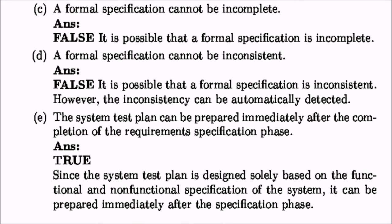(c) A formal specification cannot be incomplete — FALSE, because it is possible for a formal specification to be incomplete. (d) A formal specification cannot be inconsistent — again FALSE, because while inconsistency can be automatically detected, a specifier who is not well-versed in formal specification can still commit mistakes. (e) The system test plan can be prepared immediately after the completion of the requirements specification phase — TRUE, because the system test plan can be designed on the basis of the functional and non-functional specifications in the SRS.